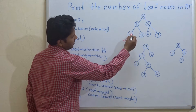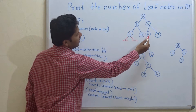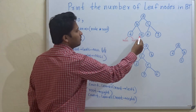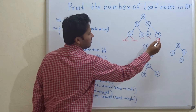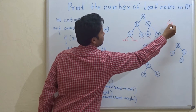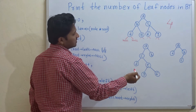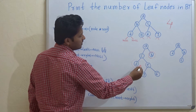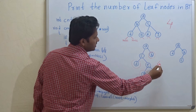In this tree, D, E, F, and G are such nodes. So the number of nodes in the tree for which left and right child are null are four nodes. In the next example, this is the leaf node, this is the leaf node, this one and this one. So the count is four.